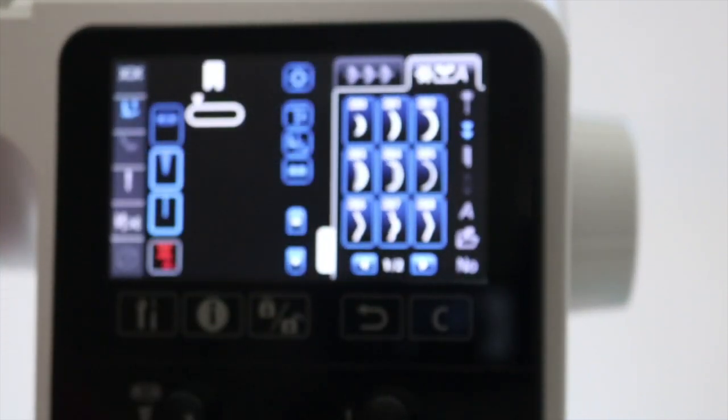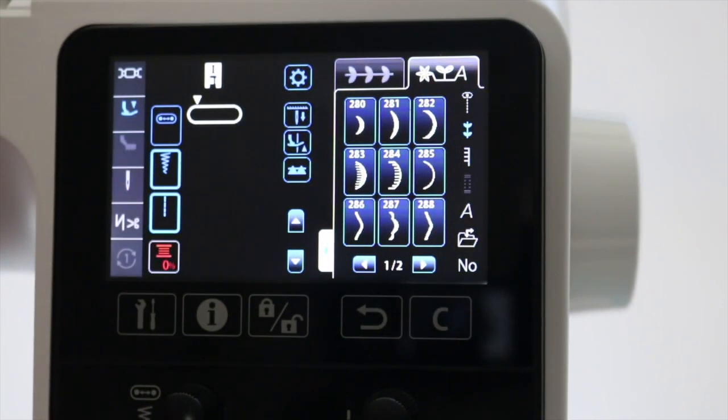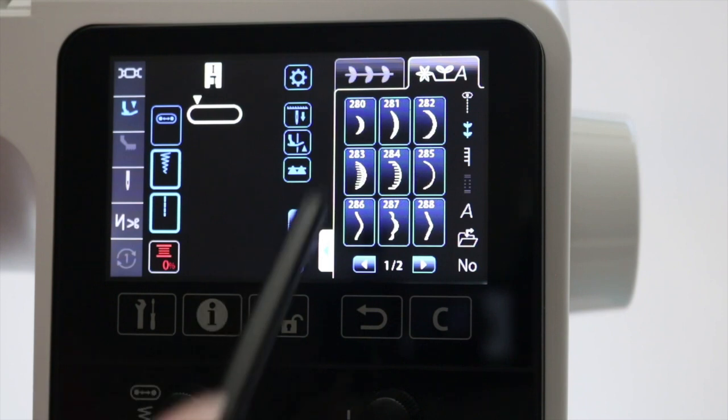Now it puts us into the memory of this machine and we can enter stitches and create a sequence of stitches. This could be with stitches or lettering, anything you want once you're in the combination screen.